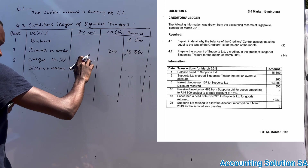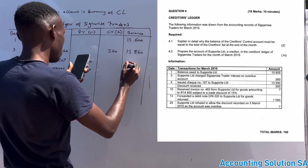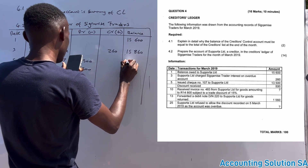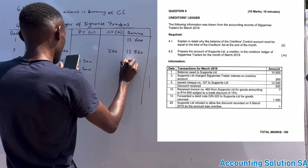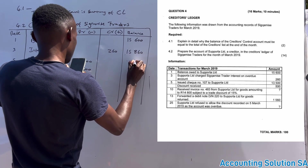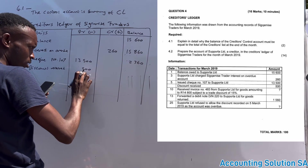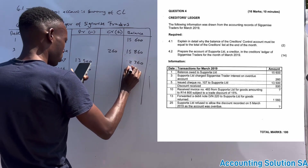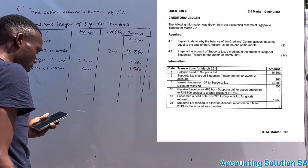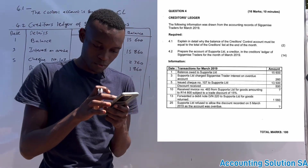The discount of 500 obviously reduces liability as well. Subtracting the payment of thirteen thousand five hundred and the discount of 500 from the previous balance of fifteen thousand eight hundred and sixty gives us two thousand three hundred and sixty, then subtracting further gives us one thousand eight hundred and sixty.